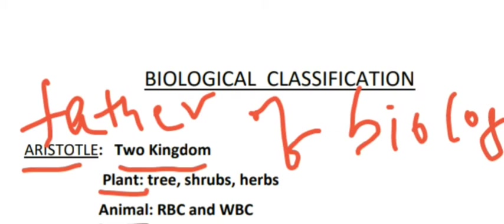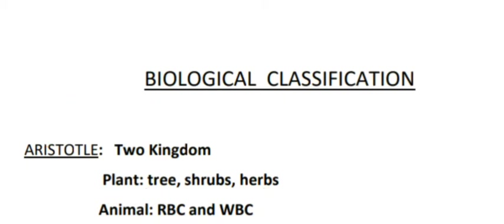Plants were further divided into trees, shrubs, and herbs. Animals were classified into those with red blood cells and those without red blood cells. So they divided organisms into two kingdoms.